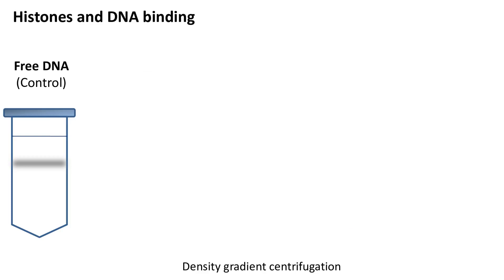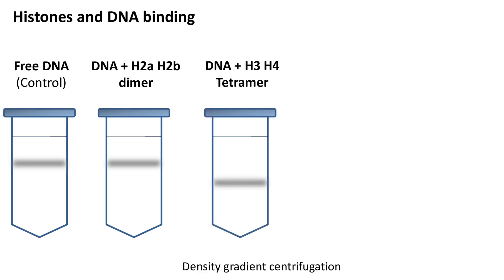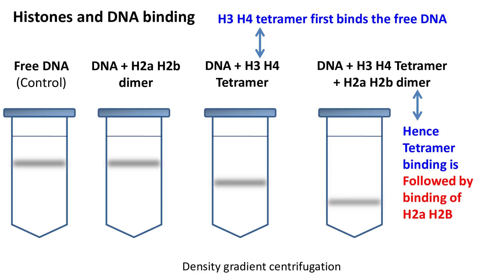If we mix the dimer H2A and H2B with DNA, then again nothing happens — there is no change in the density of DNA. However, when the tetramer of H3 and H4 is mixed with the DNA, the density of DNA increases. This means the tetramer of H3 and H4 first binds free DNA. To this mixture, if the dimer of H2A and H2B is added, then the density of the complex further increases. Hence, we can say that tetramer binding is followed by binding of H2A and H2B.